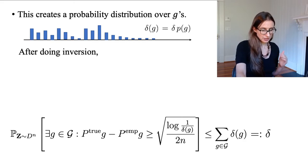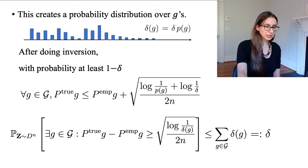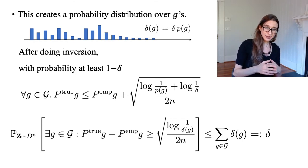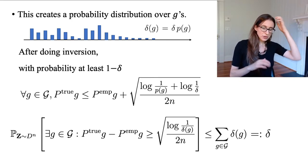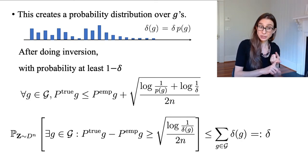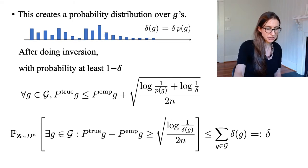After doing inversion on this equation down there, then I get that with probability at least 1 minus delta, then for all functions in the class something good happens, which is that the true risk is bounded by the empirical risk plus some stuff. So the only thing I did here was I did two things: I did inversion, and the other thing was I just substituted delta g for delta times P(g). So the log 1 over P(g) plus log of 1 over delta, that's exactly the same thing as log of 1 over delta g.